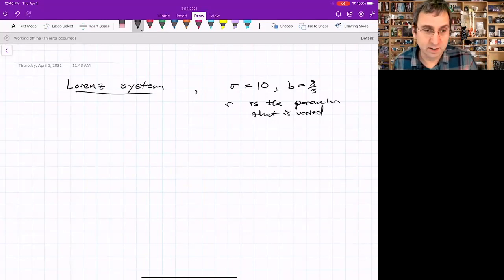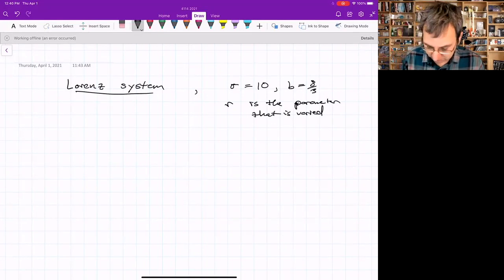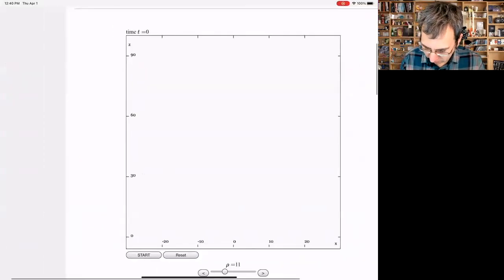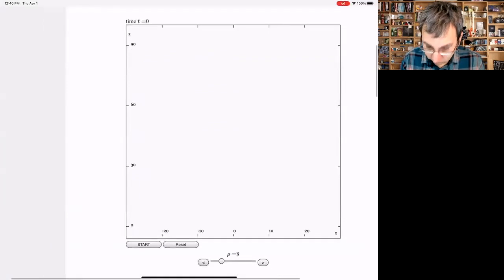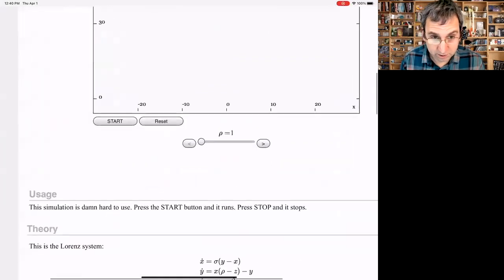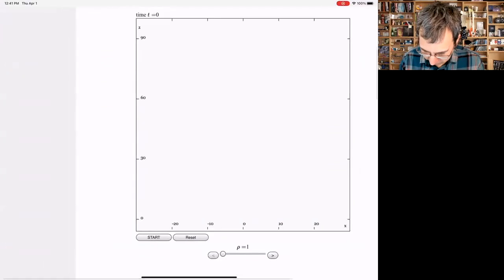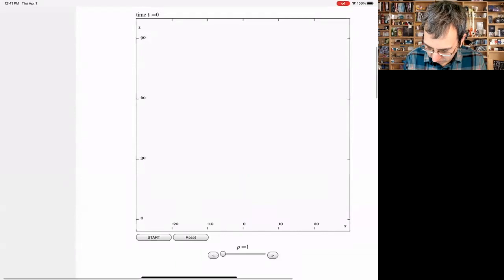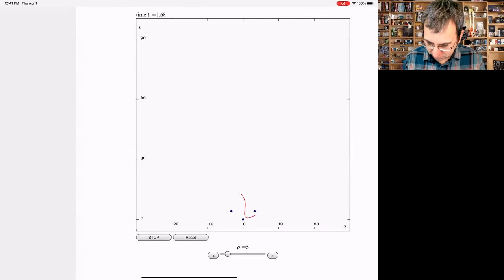It's not hard to find an online Lorenz system simulator. So I found one. Here they use rho instead of r, and you could adjust what this rho is. And if we were to start an initial condition, it's super zoomed in. You see, even for rho or r equal to 1, it's starting with random initial conditions, and they're all just going towards the origin.